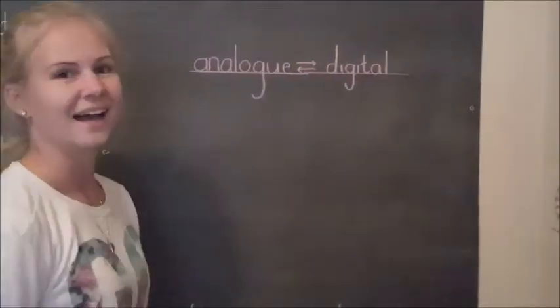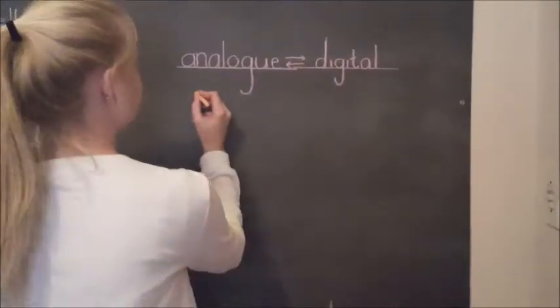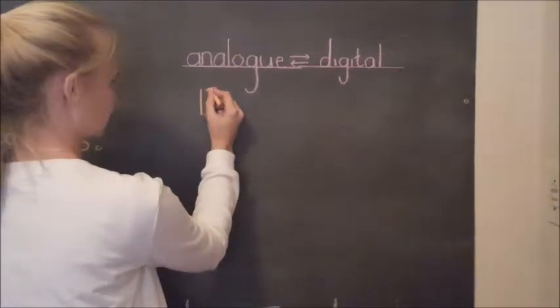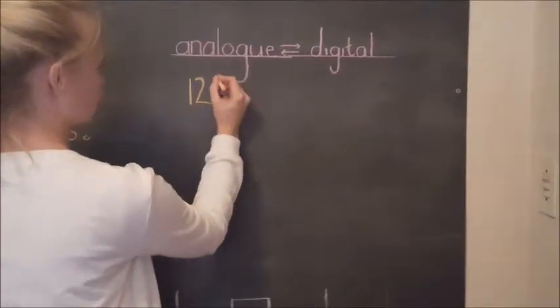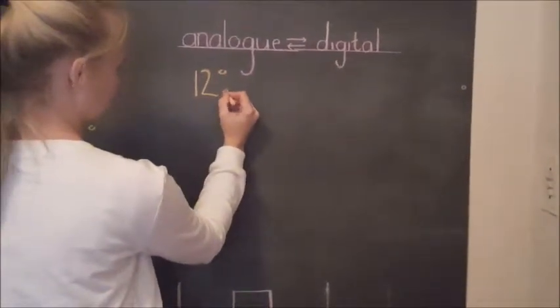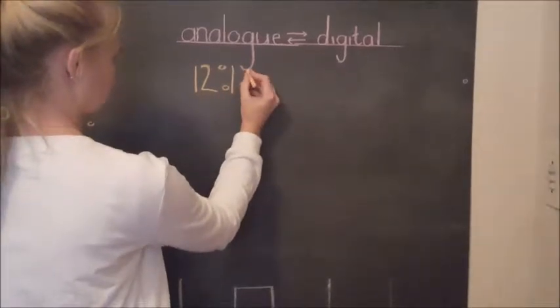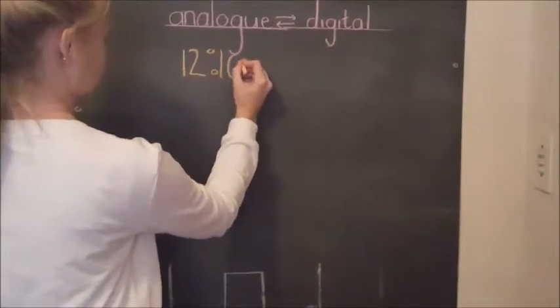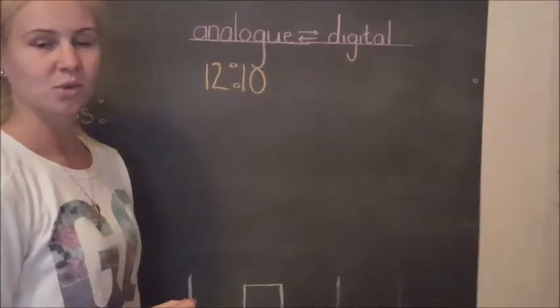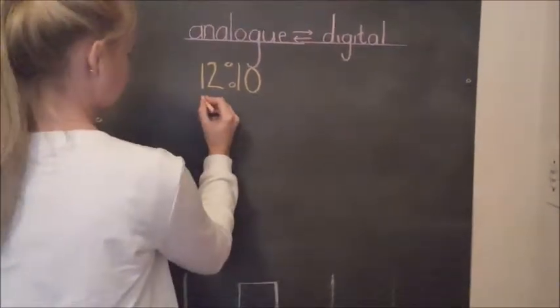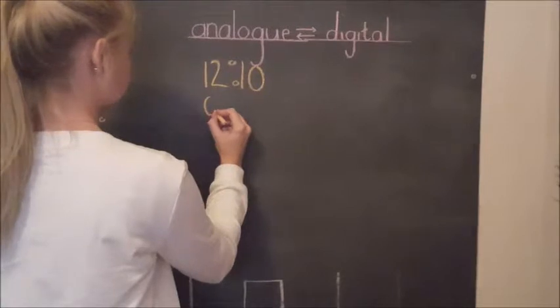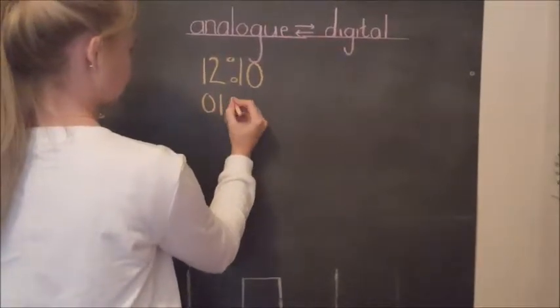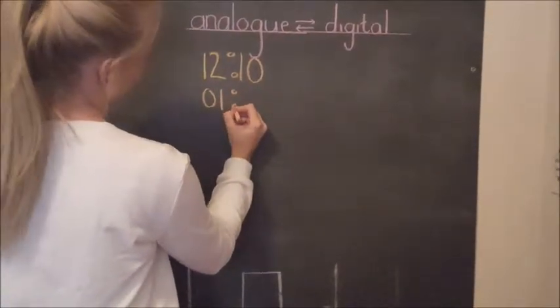We're going to write analogue into digital. 10 past 12 is 12:10. Half past 1 is 01:30.